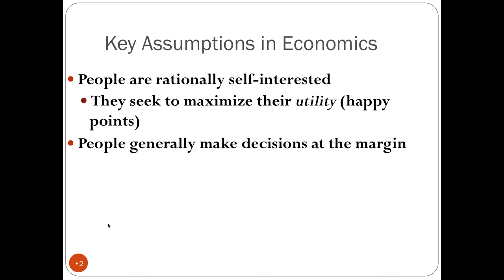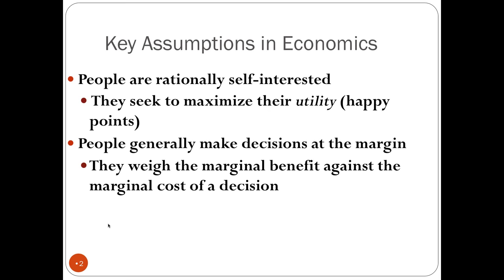People generally make decisions at the margin. When people make decisions, they're going to be making decisions based on the status quo — a change from the status quo. When we look at decision at the margin, we're deciding if we're going to do one more or one less of something. One unit is very key in marginal analysis. When people decide to do things, they weigh the marginal benefit against the marginal cost, and generally if people do something, the marginal benefit is greater than the marginal cost.